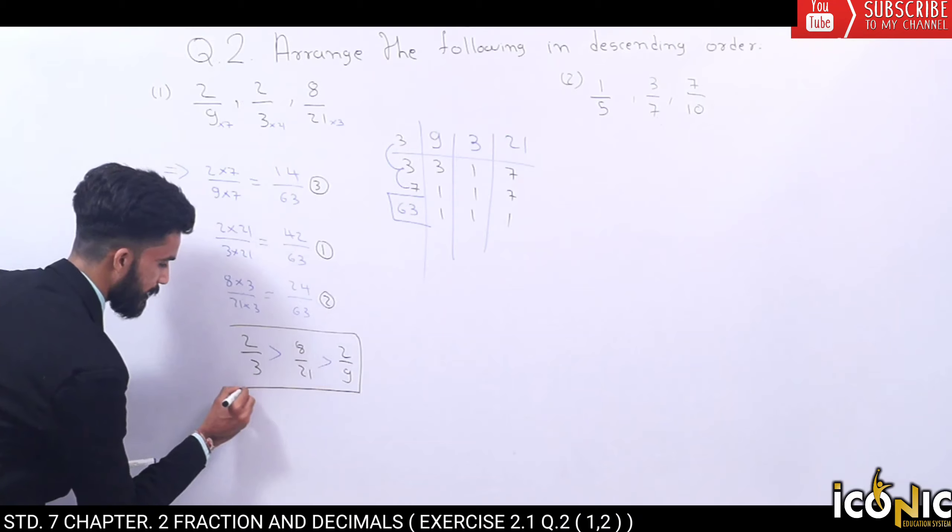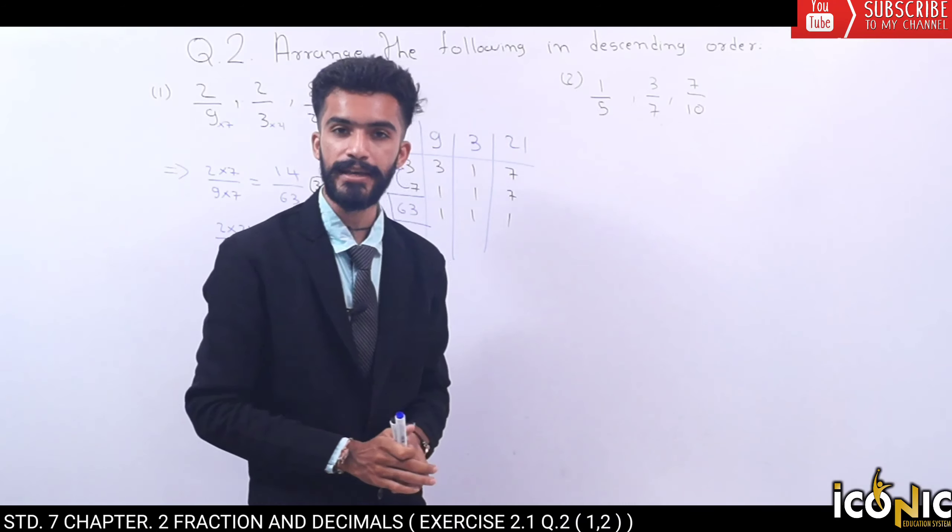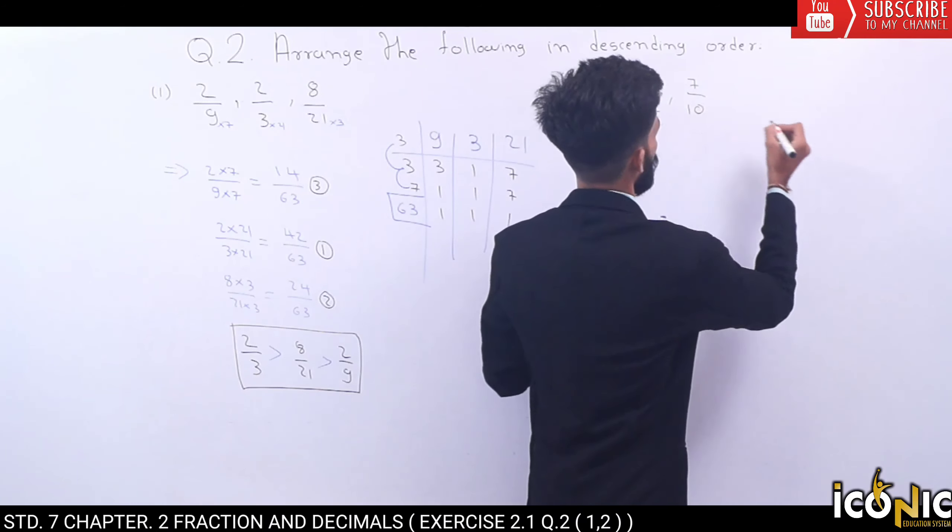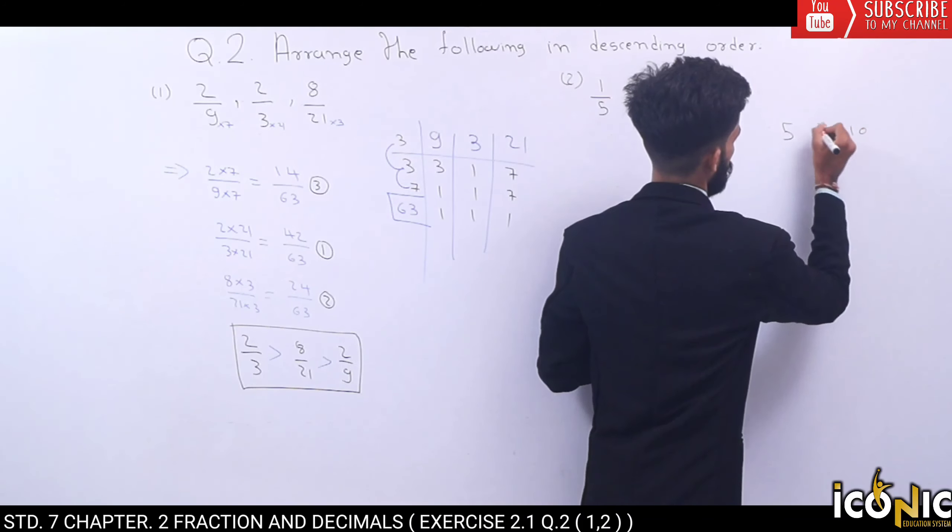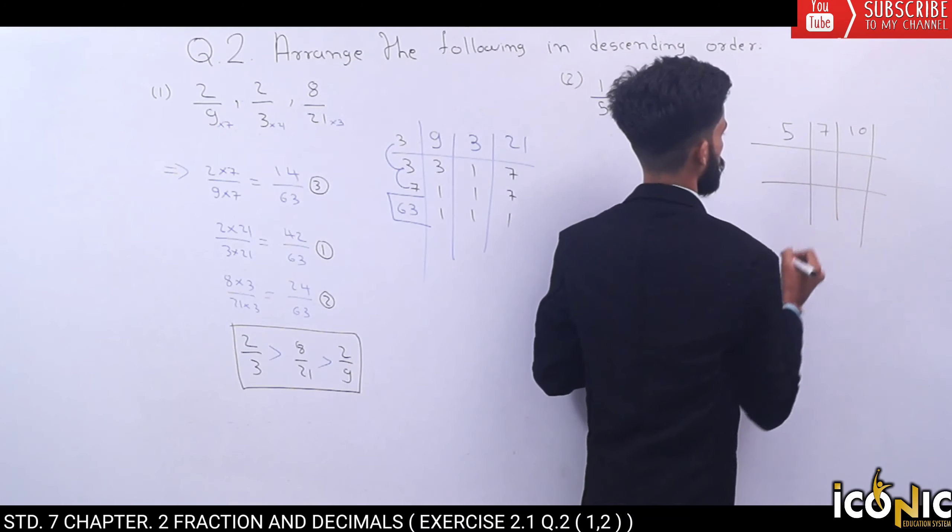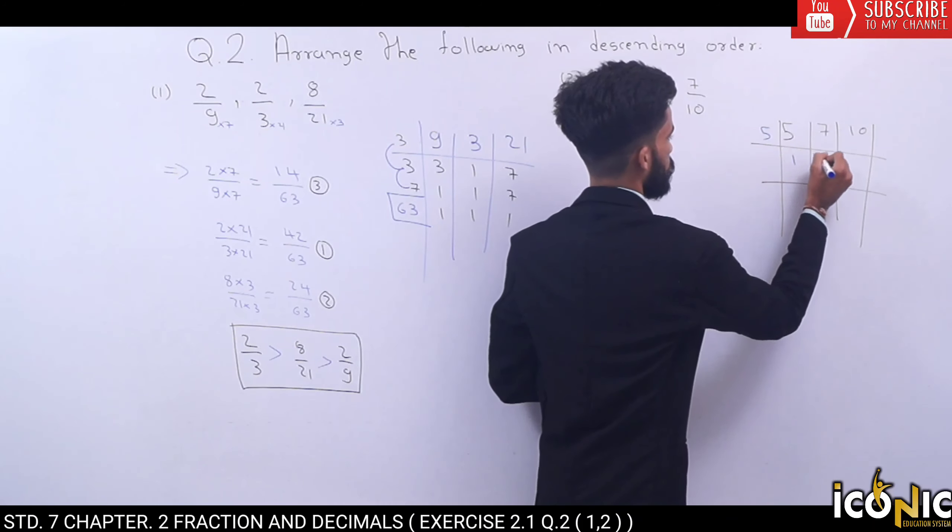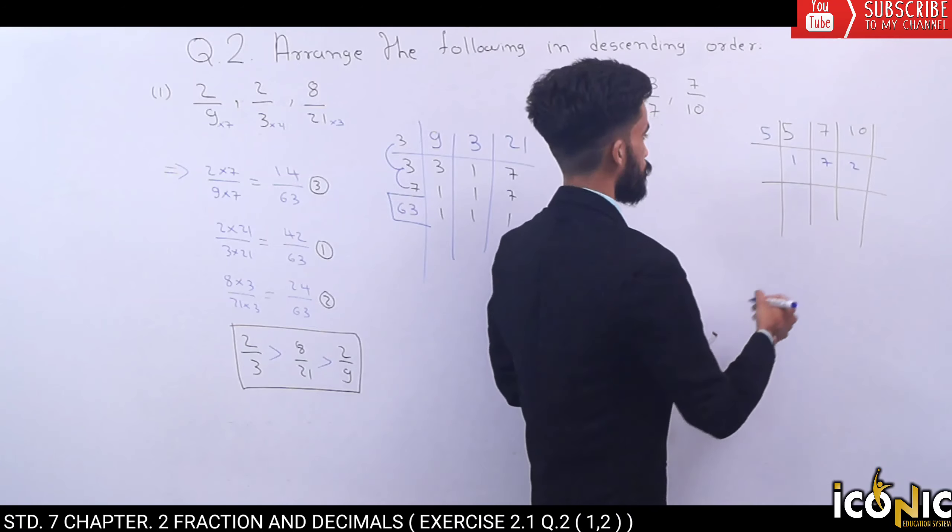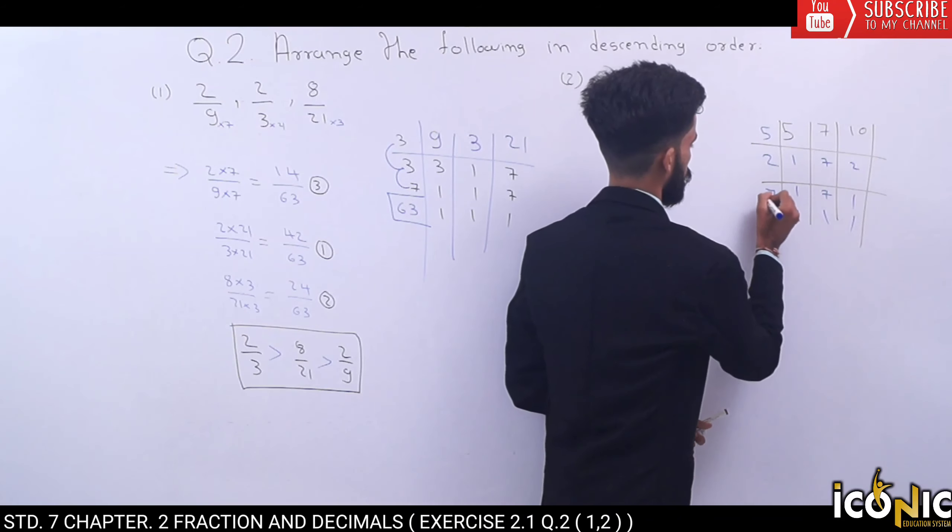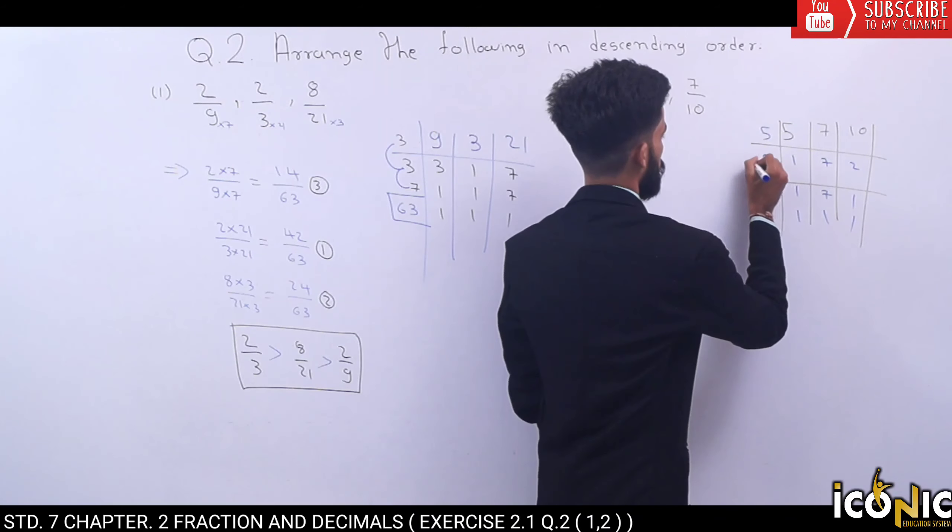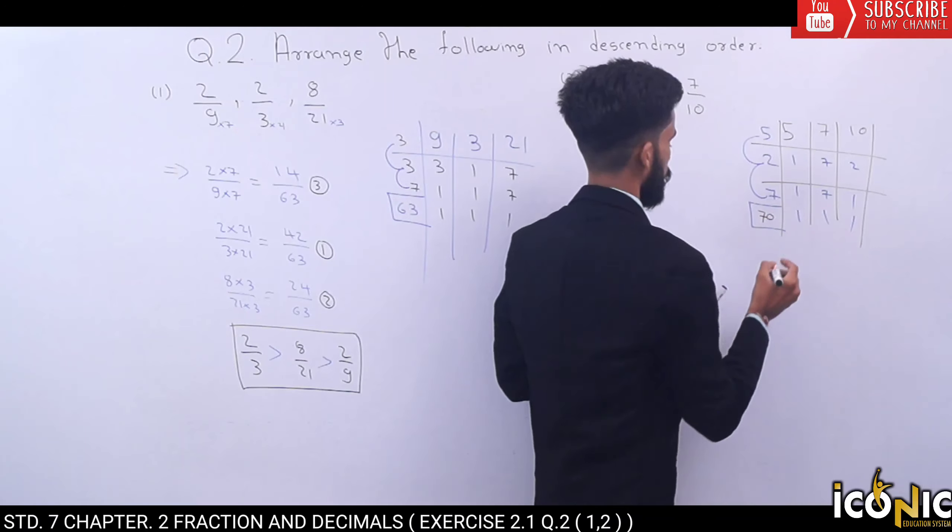Same way, question number 2 part b. Here we will find LCM. Let's take 5, 7, and 10. 5, 7, and 10. 5 here, 7 here, 2 here, 2 here, 1 here, 7 here, 1, 7, 1, 1, 1. So our LCM here is 7 times 2 is 14, times 5 is 70.